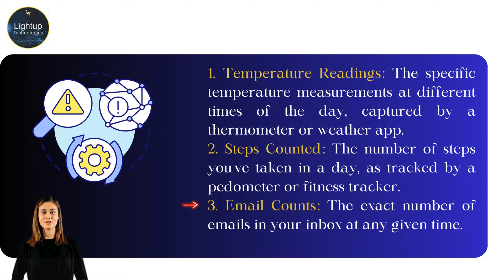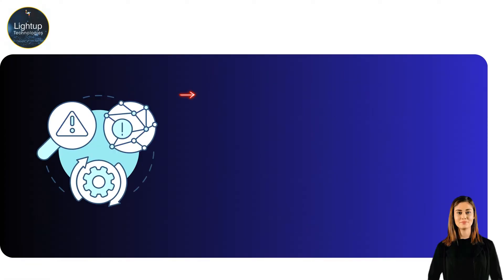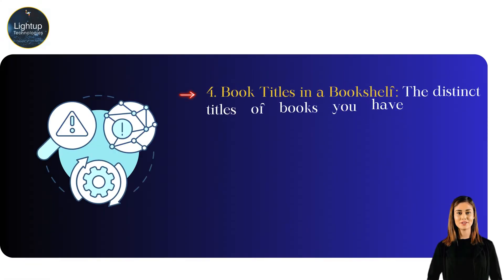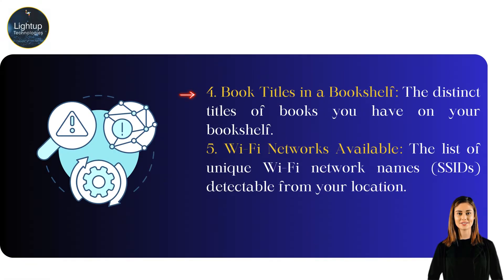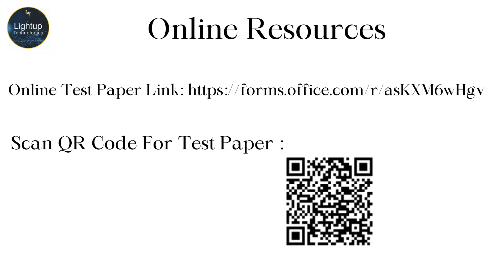Third, email counts: the exact number of emails in your inbox at any given time. Fourth, book titles on a bookshelf: the distinct titles of books you have on your bookshelf. Fifth, Wi-Fi networks available: the list of unique Wi-Fi network names, or SSIDs, detectable from your location. Thank you.